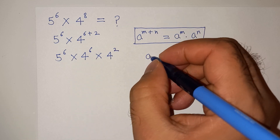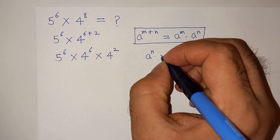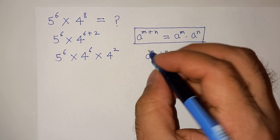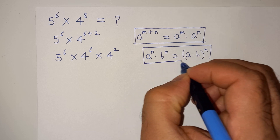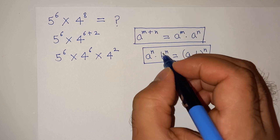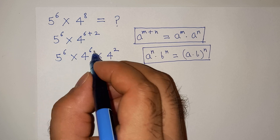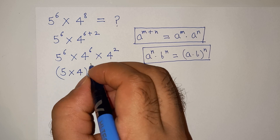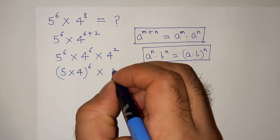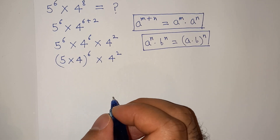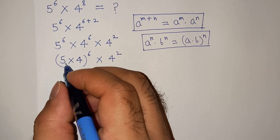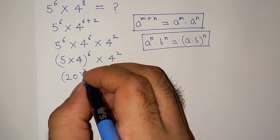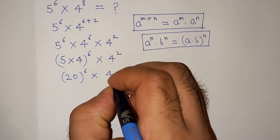We also know the exponential rule which says a power n multiplied by b power n is the same as (a multiplied b) power n. This applies when the exponent is the same. You can see the exponent 6 is the same, so we can combine: (5 into 4) power 6 multiplied by 4 square, which gives 20 power 6 multiplied 4 square.